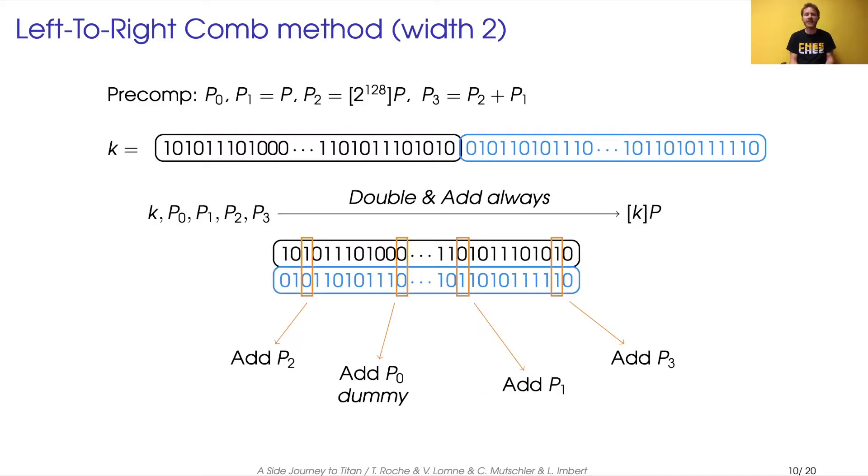So how works the left-to-right comb method of width 2? It needs pre-computed points, so four of them, P0 to P3, on the elliptic curve. And the scalar is divided into parts, the upper half and the lower half.